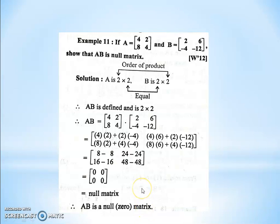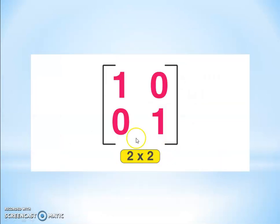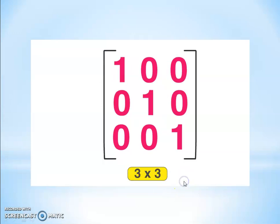In all the examples, we are clear about the addition, subtraction, and multiplication of matrices. To revise: the identity matrix for 2 by 2 is [1, 0; 0, 1], where the diagonal entries a11 and a22 are 1, used for 2 by 2 order square matrices. The identity matrix for 3 by 3 is [1, 0, 0; 0, 1, 0; 0, 0, 1], where the diagonal entries are 1.